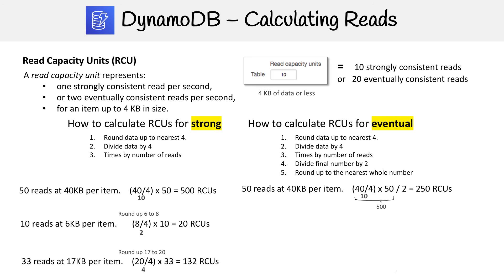So looking at the first example, we have 50 reads at 40 kilobytes per item. So 40 is already divisible by four. So we're going to divide by four, which gives us 10. And we're going to times by 50, which gives us 500, then divide by two. And that's going to give us 250 RCUs.